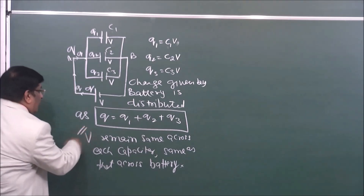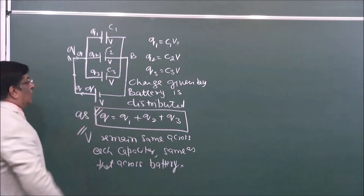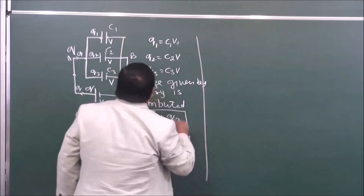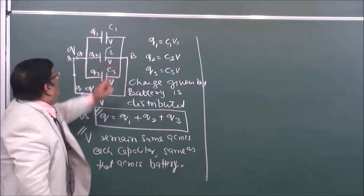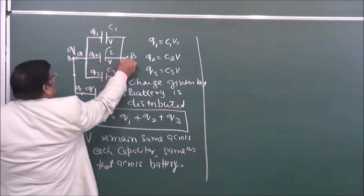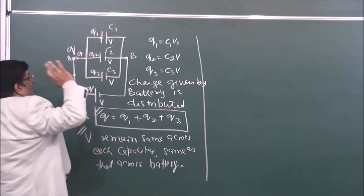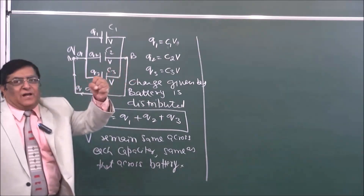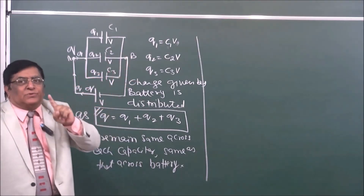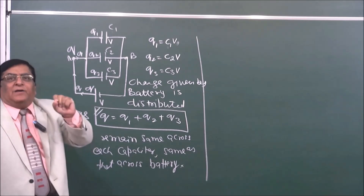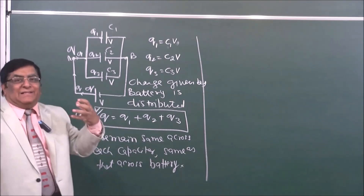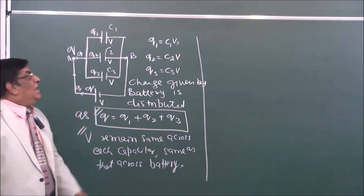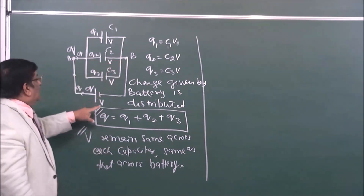This is the rule of V: potential is same across each capacitor. This is the rule of Q: charge is distributed. Now, what is the rule of C between points A and B?